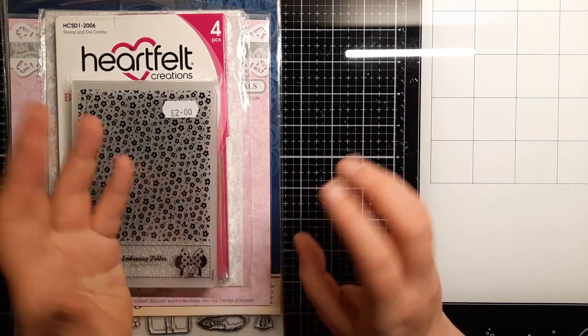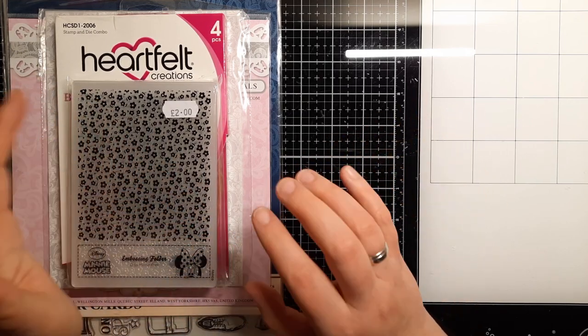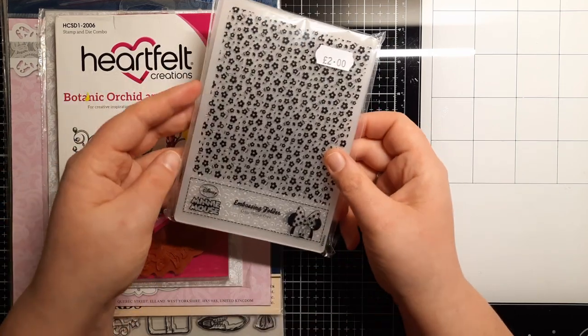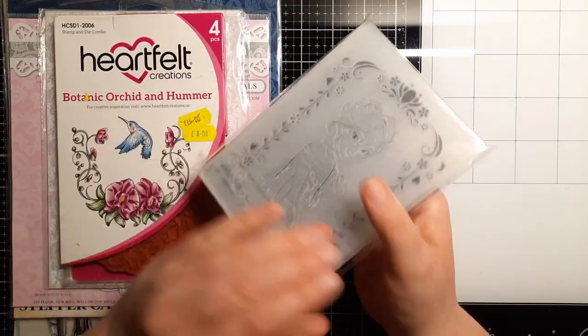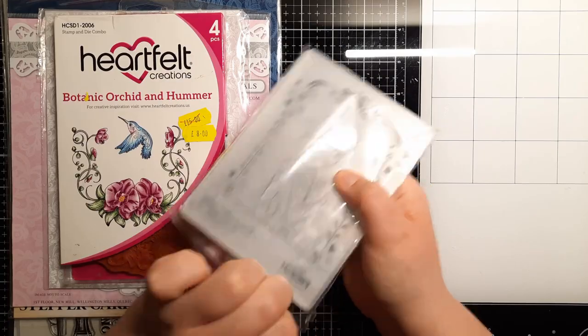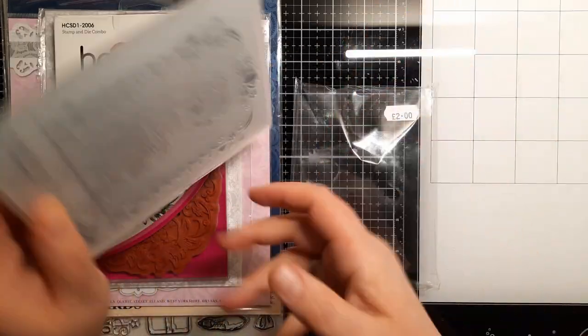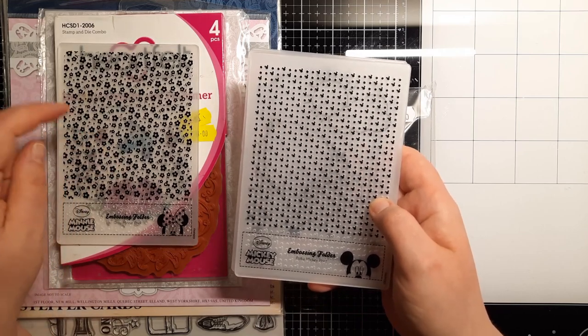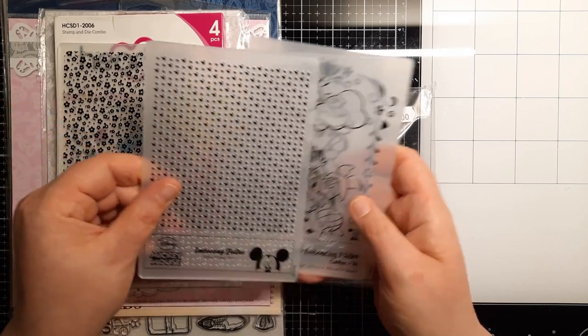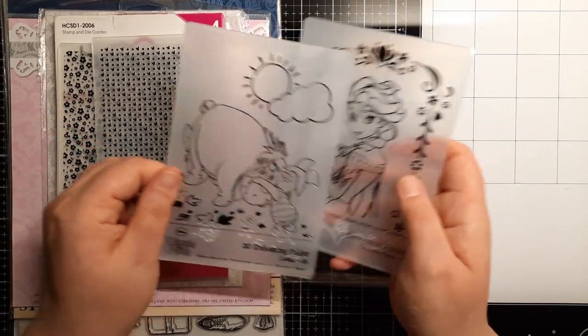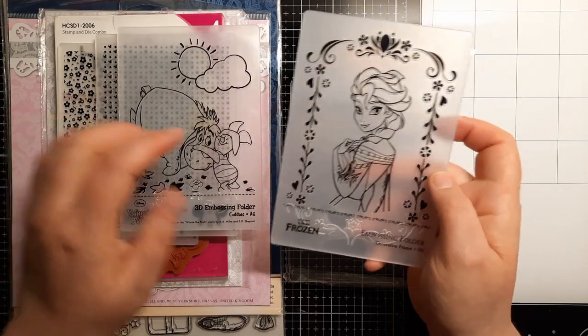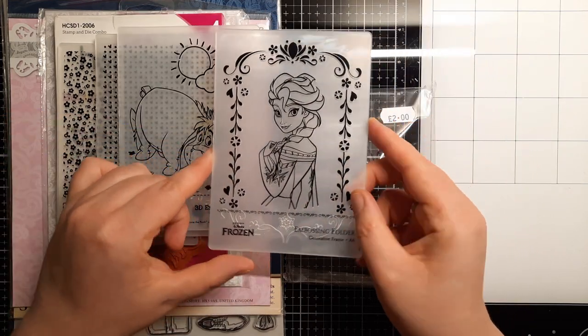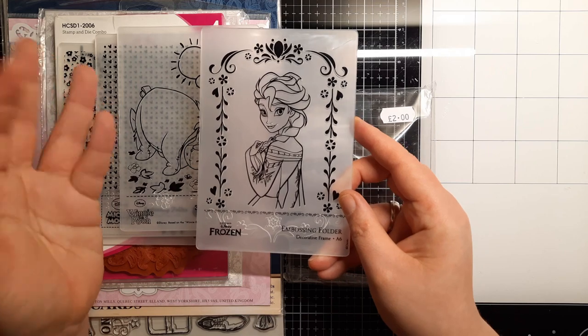So the very first thing I bought was this embossing folder pack. As you can see it was two pounds and it has those amazing mini mouse embossing folders, Mickey Mouse also, one from Winnie the Pooh and one from Frozen. When I saw it I thought I can make so many cards for little girls with those ones.